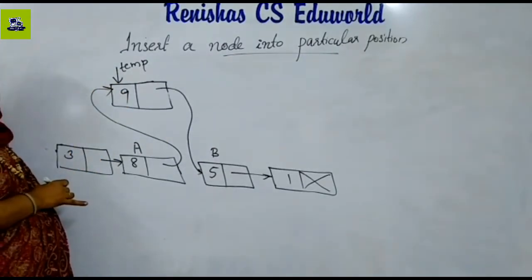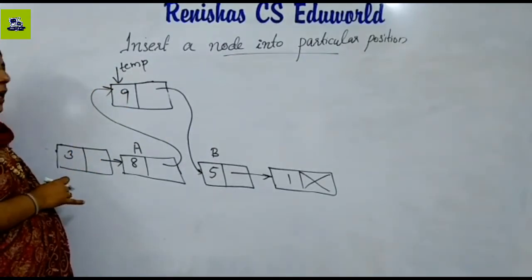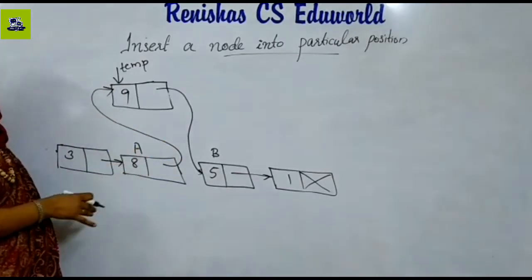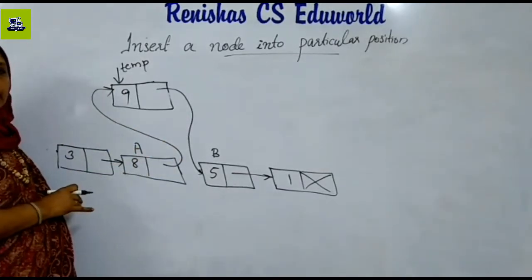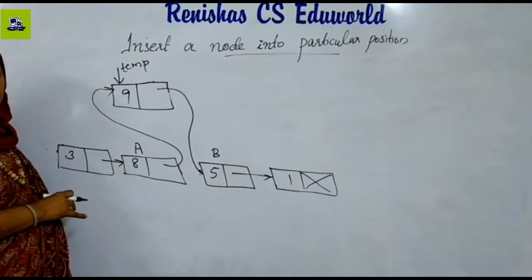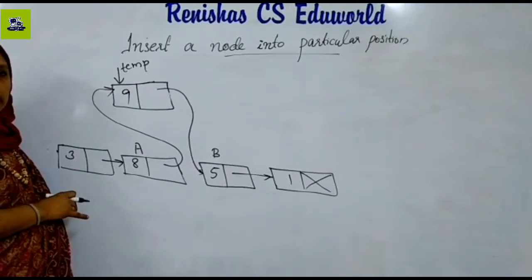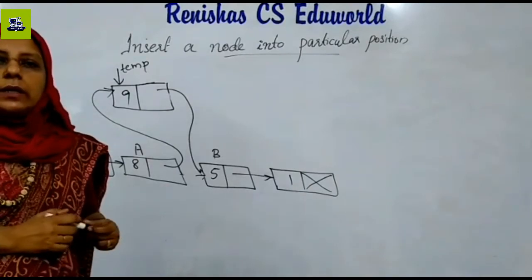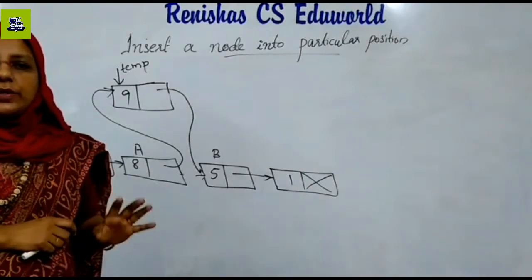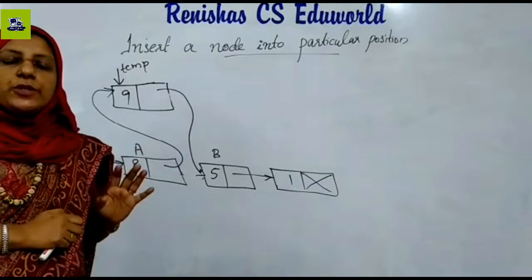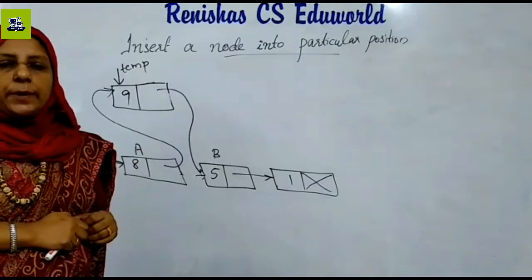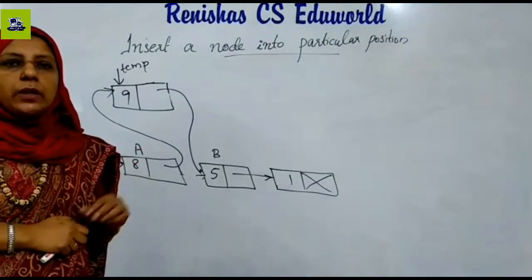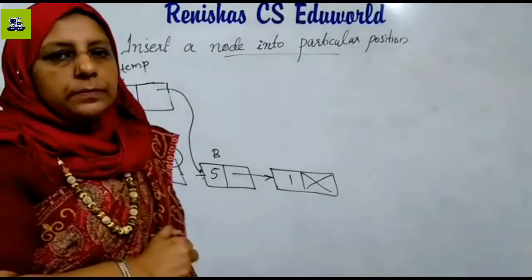The second node is connected by T, and the next node is connected to B. We want to connect the third node. This is a particular node insertion. The algorithm for inserting at a particular position: we start by reading the position to be inserted.